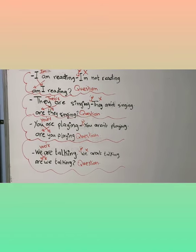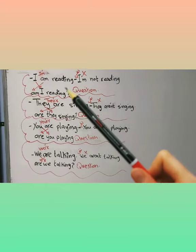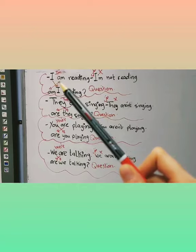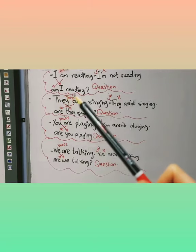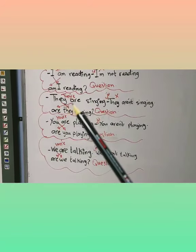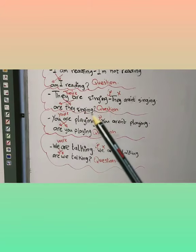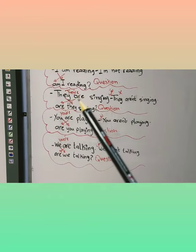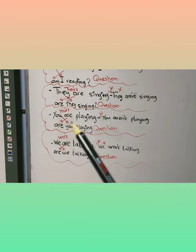Now if we want to convert these sentences into questions, what do we do? Look at the board. We bring the auxiliary verb first. You can see: 'Am' comes first and 'I' comes second — so it becomes: Am I reading? Look at the second one: They are singing → Are they singing?